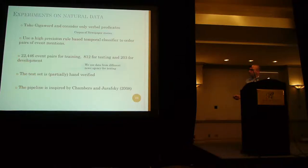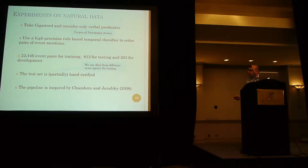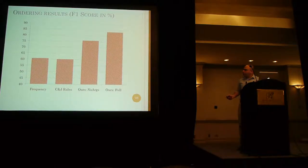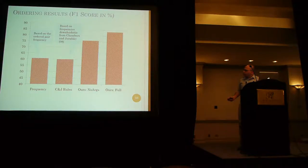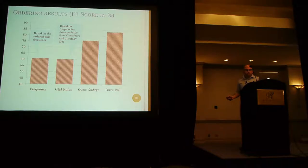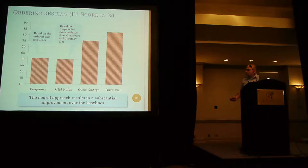We did another experiment on natural data. We took newspaper text from the Deerwood Corpus and obtained the ESDs using a high-precision rule-based metric classifier. This gave us the training set and the test set, where the test set was taken from different news stories compared to the training set. Here again we compare against the frequency-based baseline and another frequency-based baseline where frequency counts are taken from the temporal classifier of Chambers and Jurafsky. As you can see, our model again has substantial improvement over the baselines.